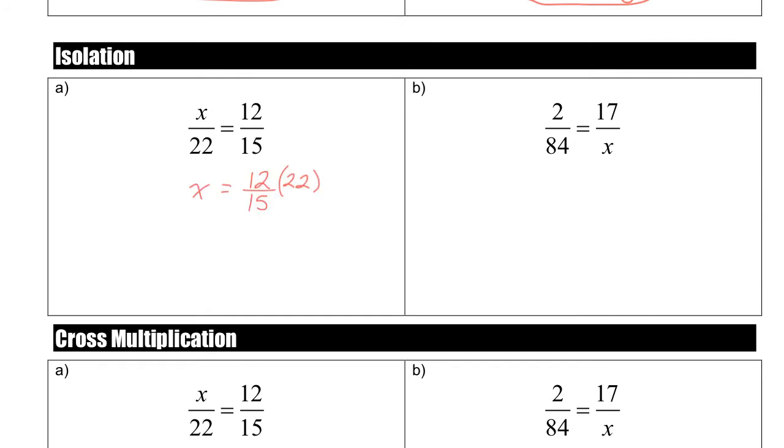So x is equal to 12 over 15 times 22. So you can do that in your calculator. 12 divided by 15 times 22. And you end up with your answer of 17.6. Now, this is the same proportion that we just solved by comparison. So we got the same answer, which is good. We know we did it right. We got the same answer both ways that we solved it.